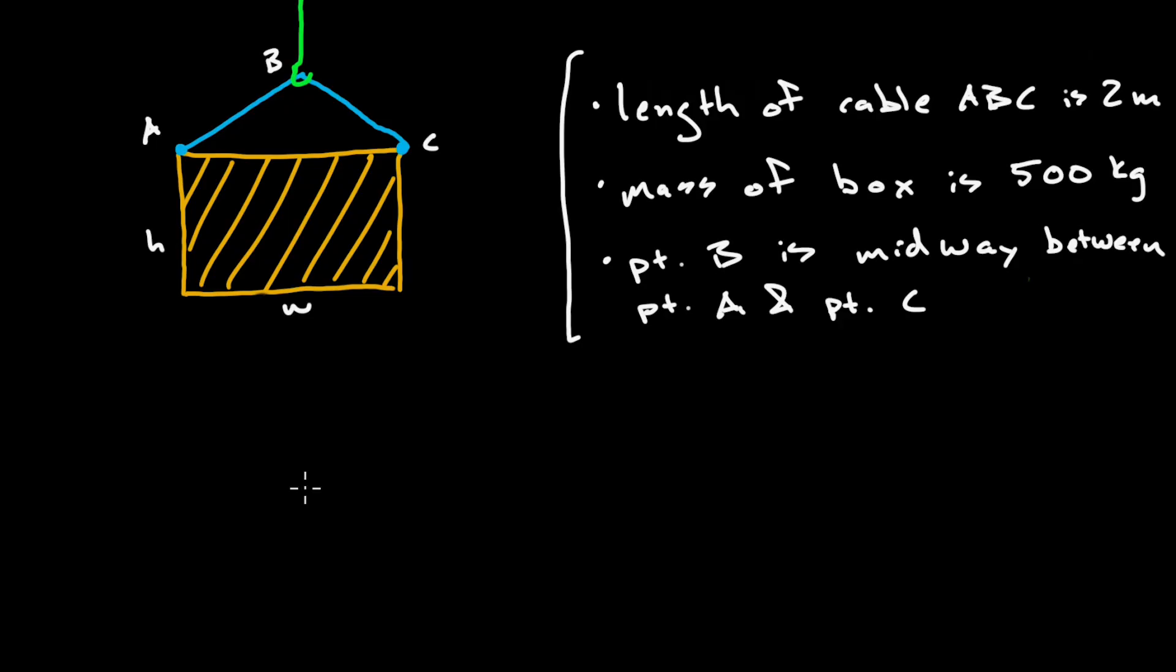So this is the setup of the problem. We've basically got a planar problem. There's a box which is this hatched yellow rectangle and it's being hoisted up by this green cable by way of cable ABC. Now the total length of cable ABC is 2 meters. The mass of the box is 500 kilograms and this anchor point at point B is midway between points A and C.